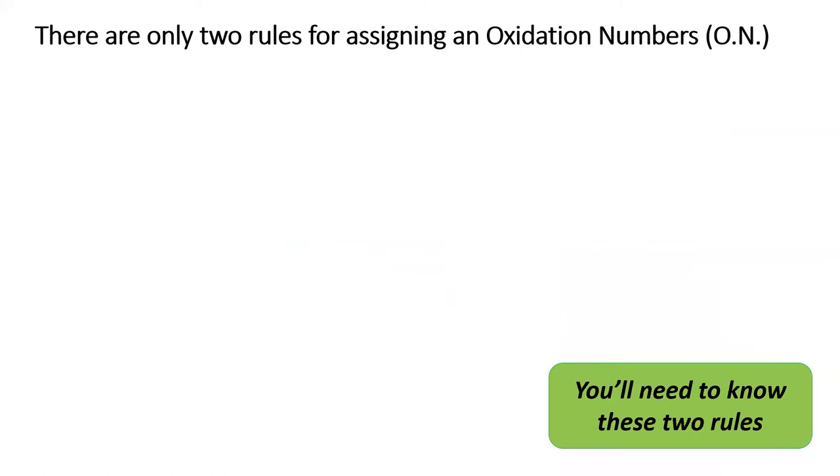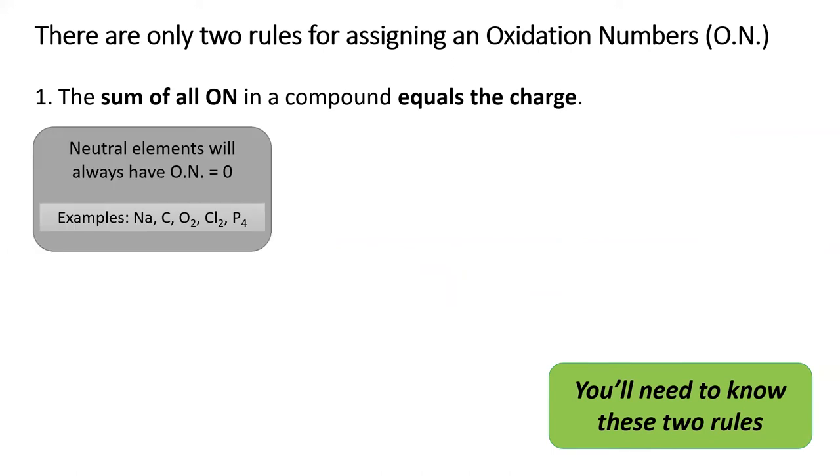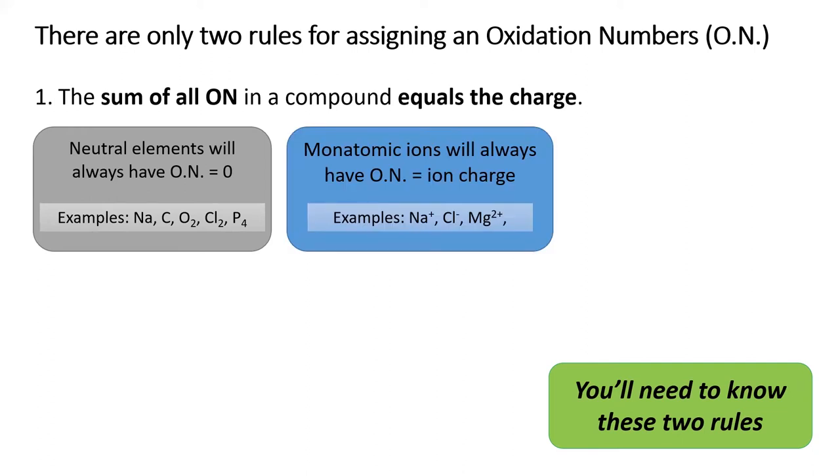While there are only two rules for assigning oxidation numbers, it often takes some practice to get comfortable doing so. The first rule is that the sum of all oxidation numbers in a compound will equal the charge of that compound. This makes it easy to assign oxidation numbers to neutral elements like sodium metal and oxygen gas. The oxidation number for all neutral elements is zero. Likewise, it's easy to know the oxidation number of a simple ion because the oxidation number will merely be the charge of that ion. Na+ has an oxidation number of +1. Cl- has an oxidation number of -1. Mg2+ has an oxidation number of +2.